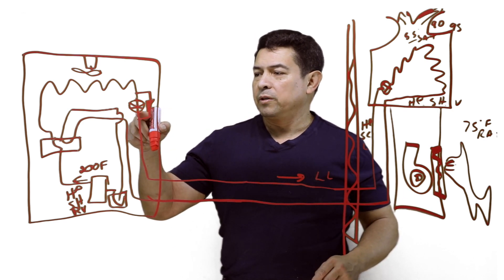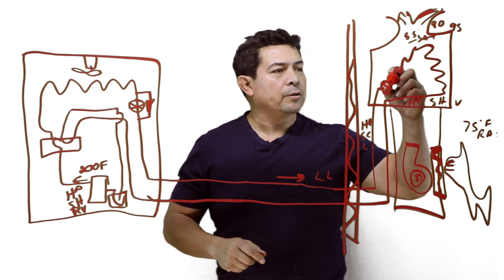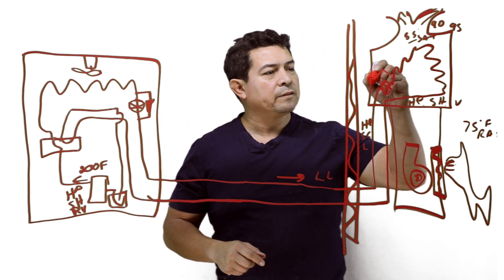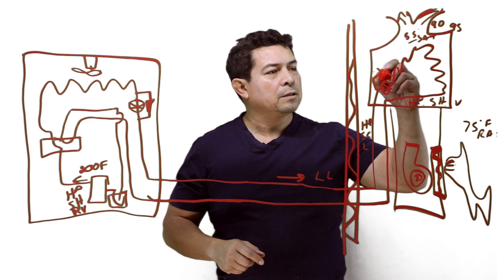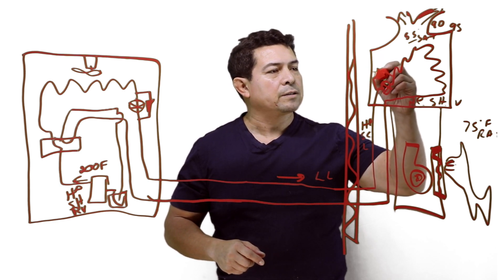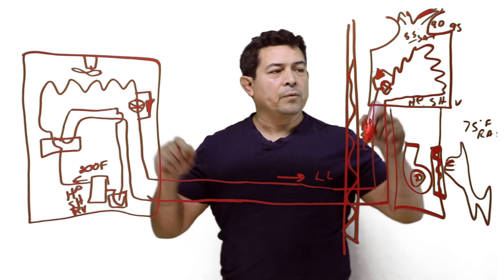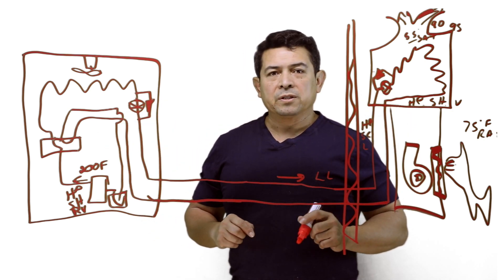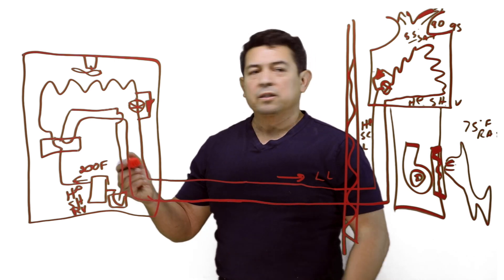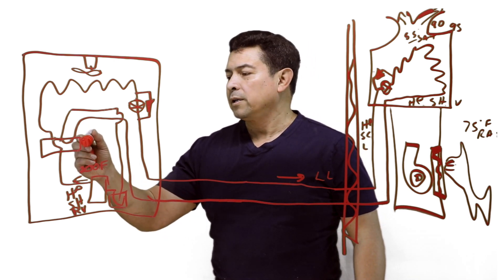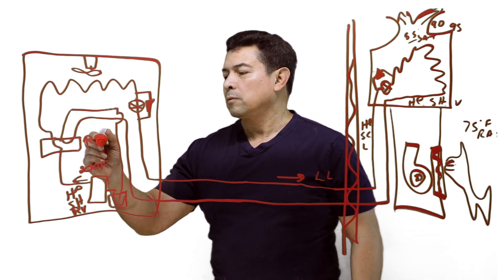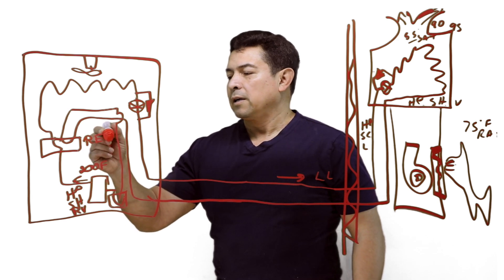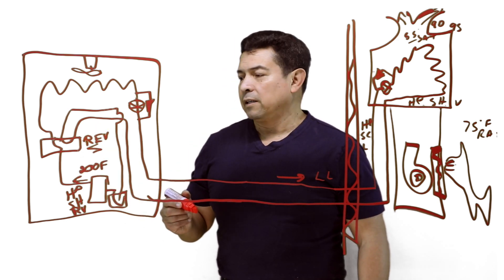Now, we have a metering device and a check valve. Here, we're also going to need a metering device and a check valve like this. So now we have two check valves, two metering devices, a reversing valve right here. Some people call this a four-way valve, or they call it a reversing valve. I, myself, I call it a reversing valve.